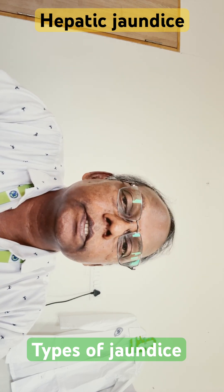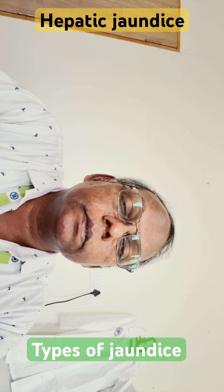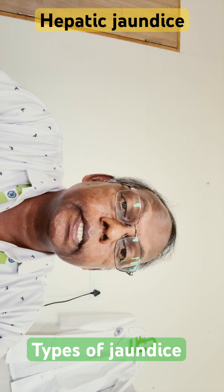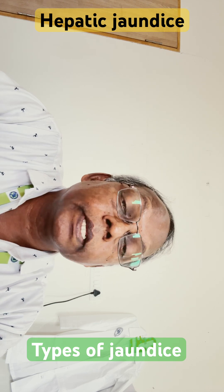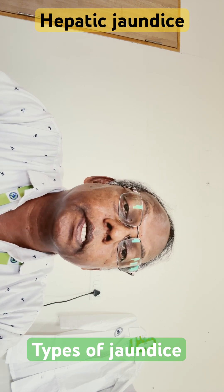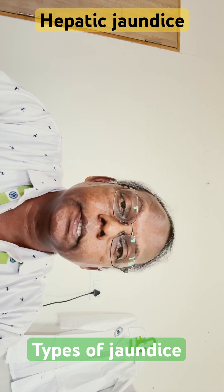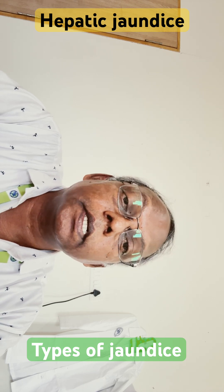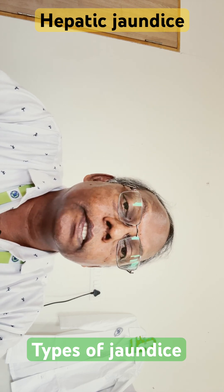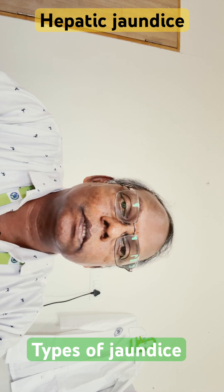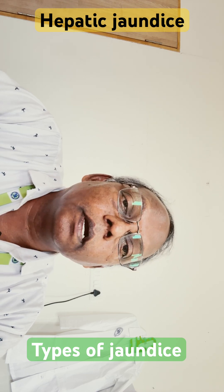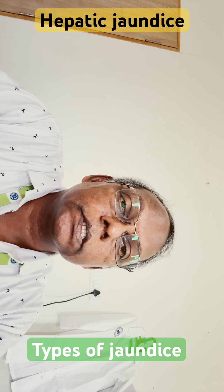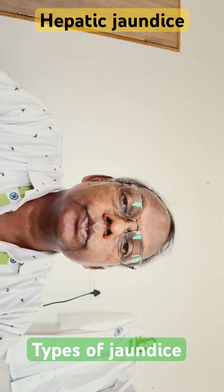The causes of hepatic jaundice: the first and foremost is viral hepatitis, including hepatitis A, B, C, and E. The second cause is cirrhosis, due to alcohol or non-alcoholic causes. The third cause is toxins such as carbon tetrachloride, chloroform, and alcohol.